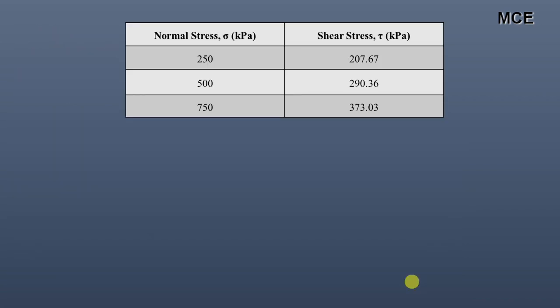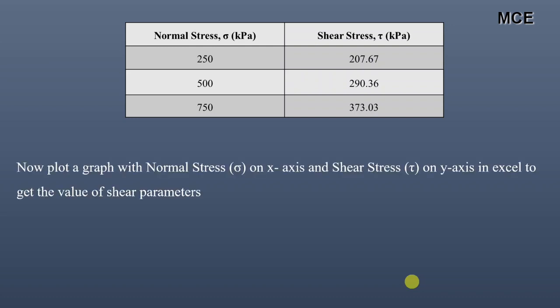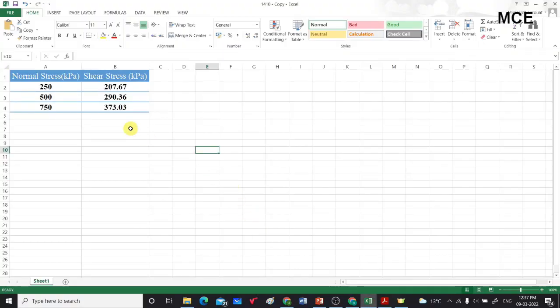We can plot a graph between normal stress and shear stress, with normal stress values on the x-axis and shear stress values on the y-axis in Excel, to get the value of shear parameters. Now we are in Excel and we can see the normal stress shown in this column and shear stress values shown in the right column.